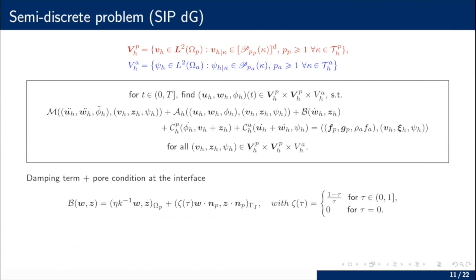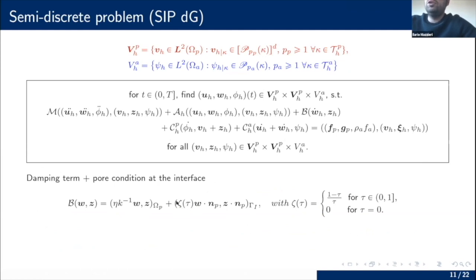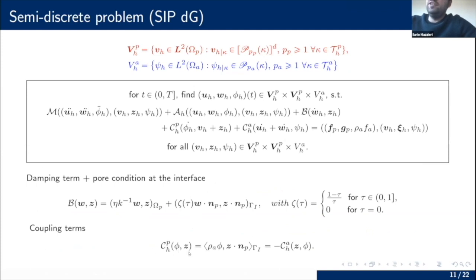The bilinear form B is the damping term and also contains the pore condition at the interface, introduced via a function zeta that depends on tau; for tau equal to zero it is absent. Finally, the coupling terms are inside bilinear forms C_P and C_A, which are skew-symmetric. Concerning the analysis, we first analyze the stability of the problem and introduce an energy norm corresponding to the mechanical energy of the problem — the sum of the mechanical energies in the poroelastic and acoustic domains, consisting of kinetic and potential energy terms.